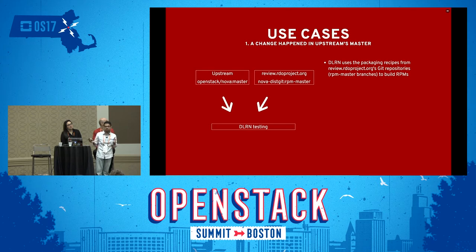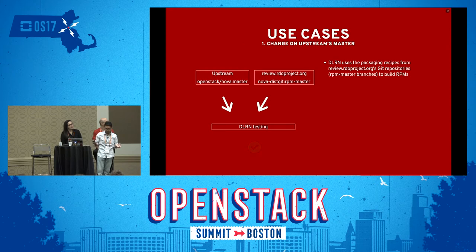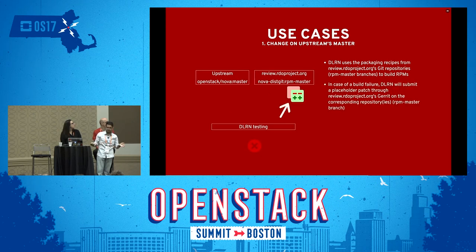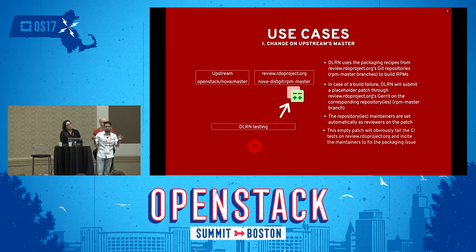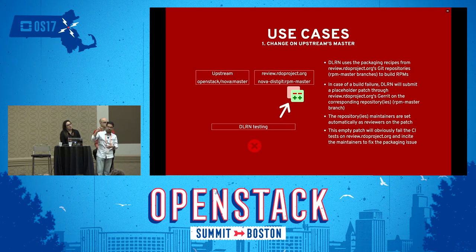Let's see a few use cases. First use case: a change happens upstream. A DeLorean job is triggered. It retrieves all the sources from upstream and the packaging recipes from RDO, and tries to build a package out of it. First case — it works, perfect. Second case — it fails. What happens when it fails? We create a placeholder patch on review.rdoproject.org, opened against the proper branch and proper repository, to say: hey maintainers, we can't build the master branch currently, so please fix it. The patch is supposed to fail — otherwise it wouldn't respect the usual red-green-refactor cycle.